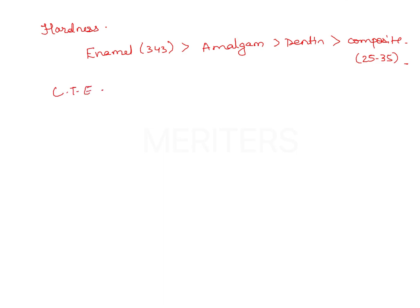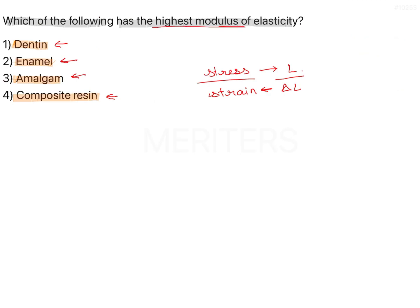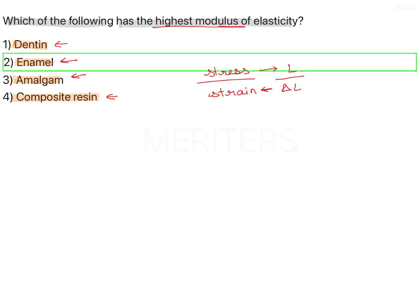Coefficient of thermal expansion is another thing that is asked in the exam. Coefficient of thermal expansion is highest for composite, then amalgam, then enamel and then dentine. So remember these orders as well. The correct answer to highest modulus of elasticity is enamel.